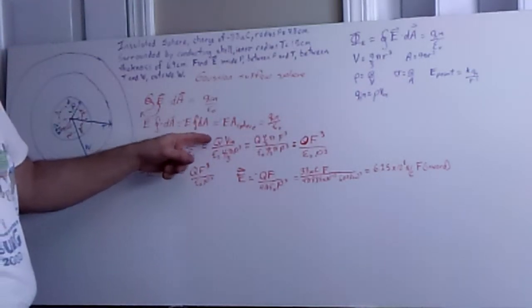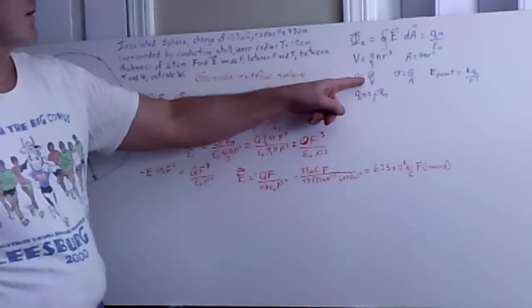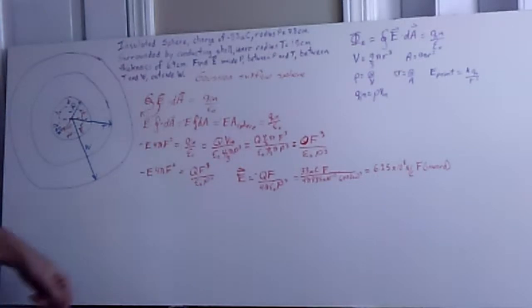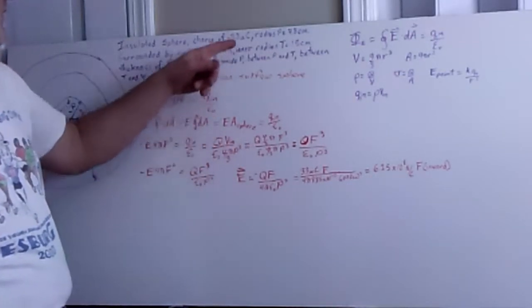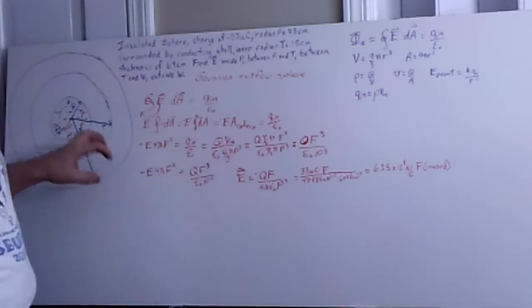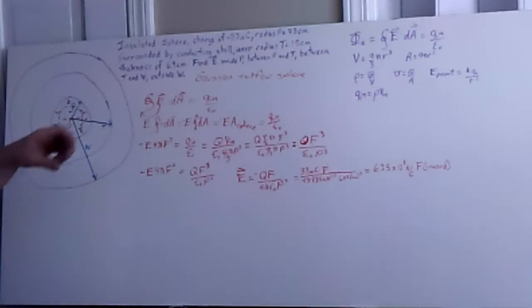We just go ahead and we take our total charge q, as I did over here, divided by the volume of our insulated sphere, and so there's big Q to represent the total charge, and 4 thirds pi p cubed for the total volume of the insulated sphere.